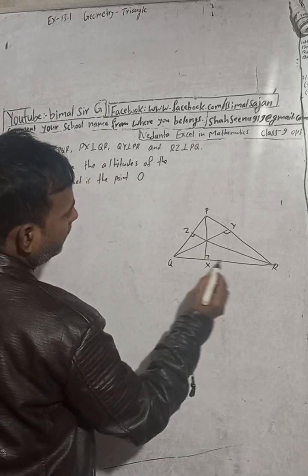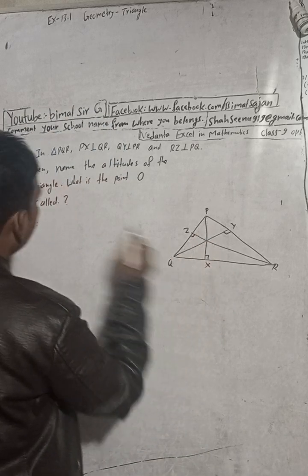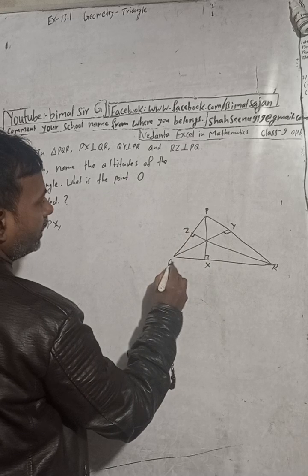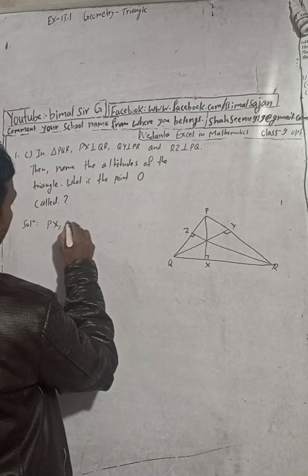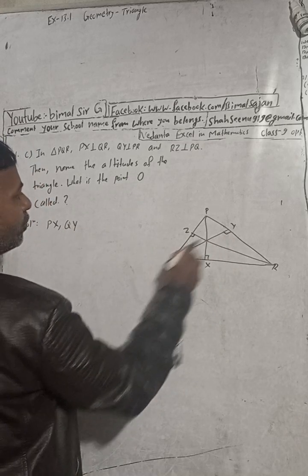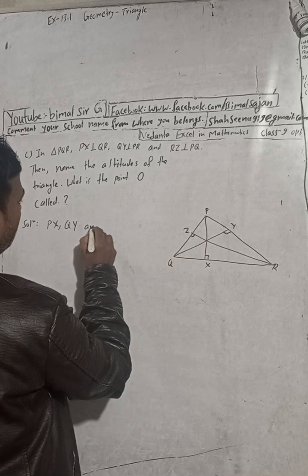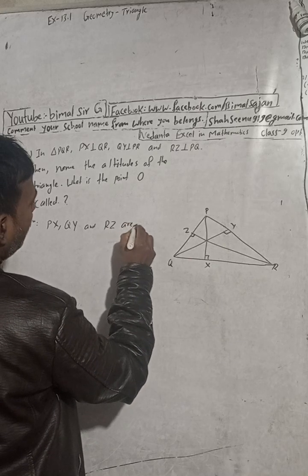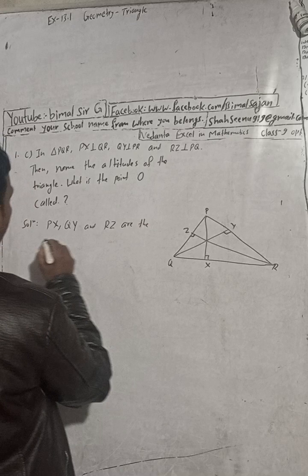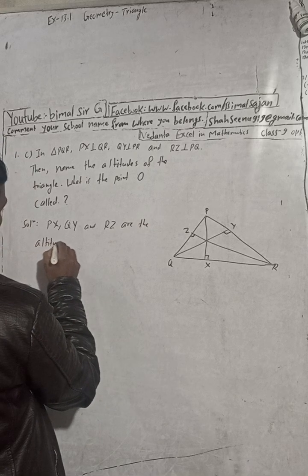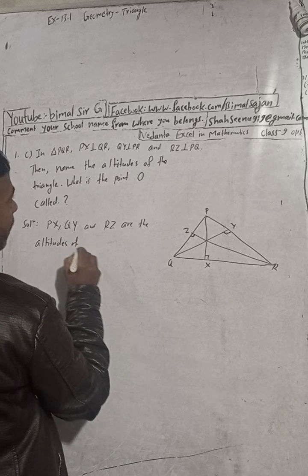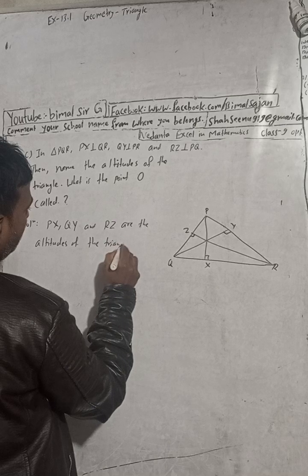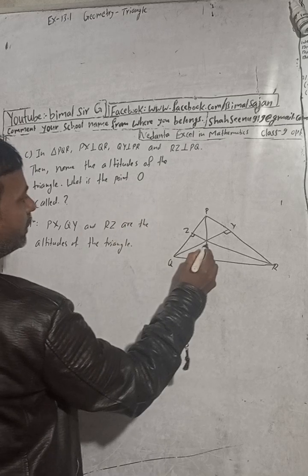The altitudes of the triangle are PX, QY, and RZ. These three — PX, QY, and RZ — are the altitudes of the triangle.